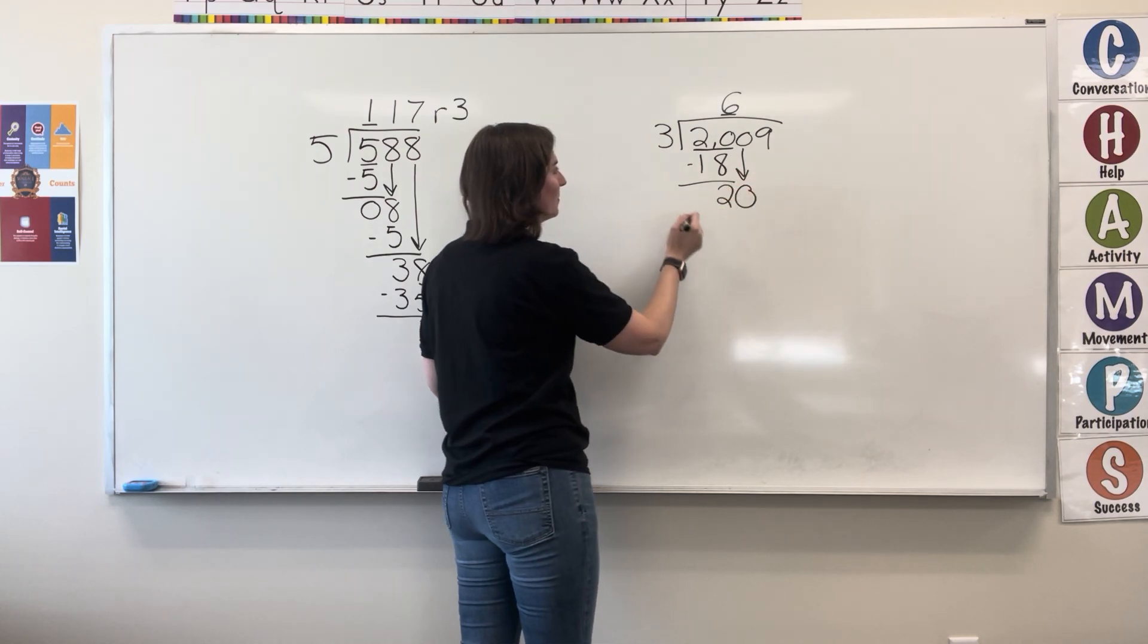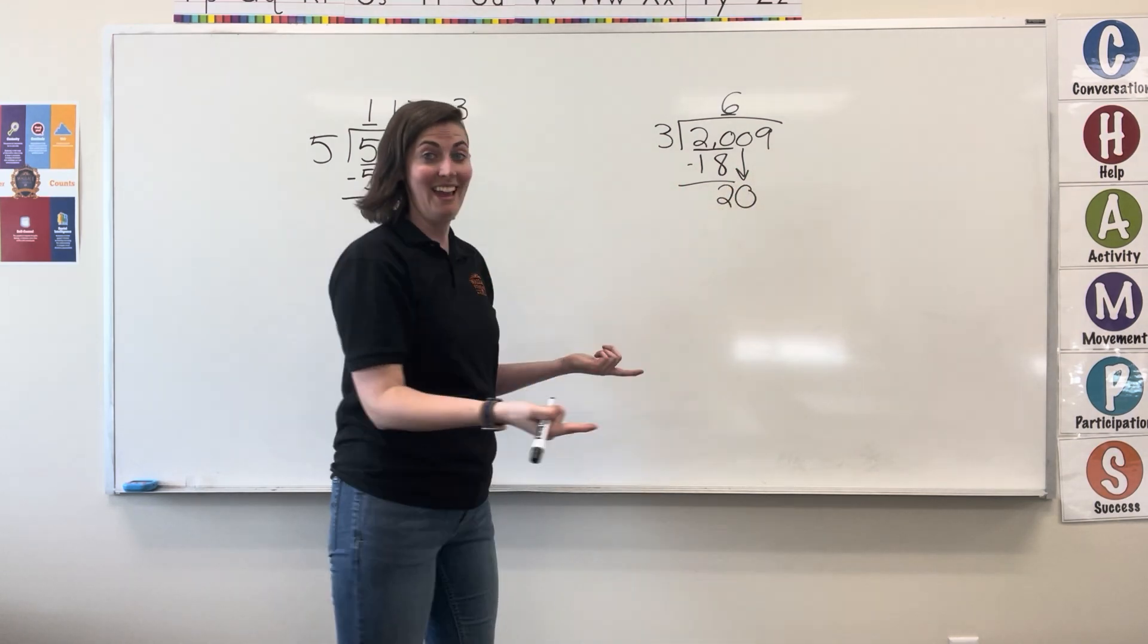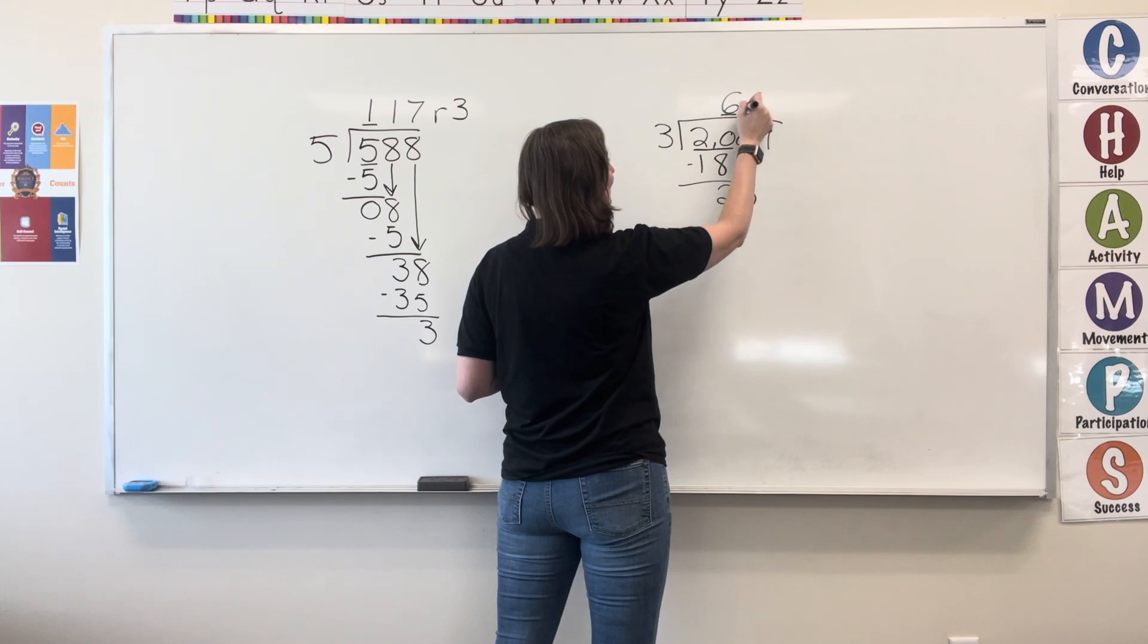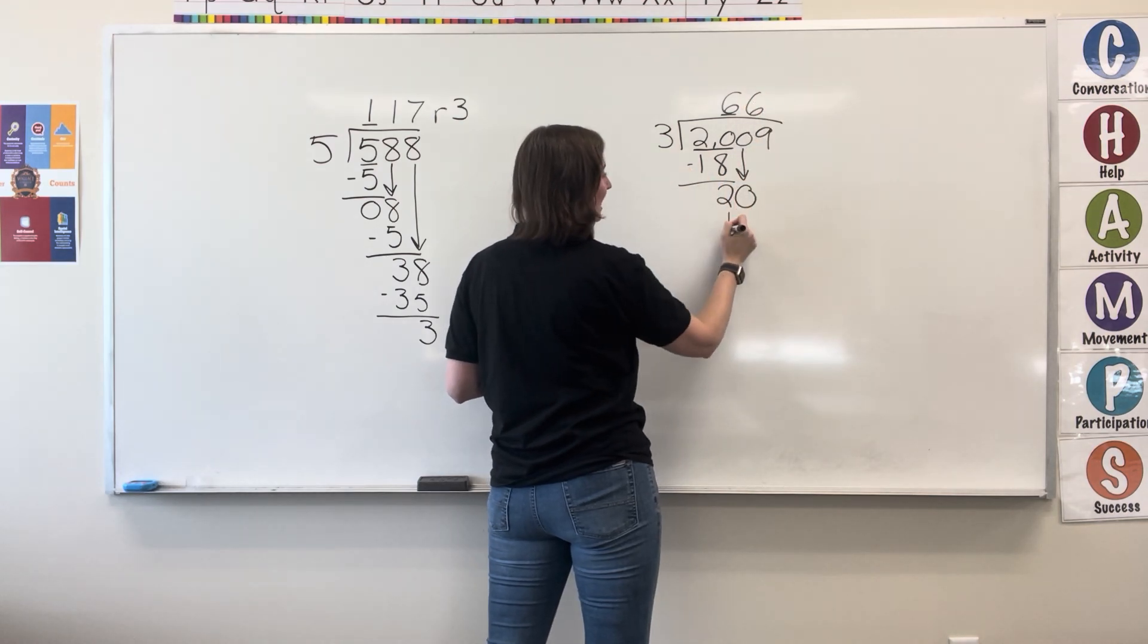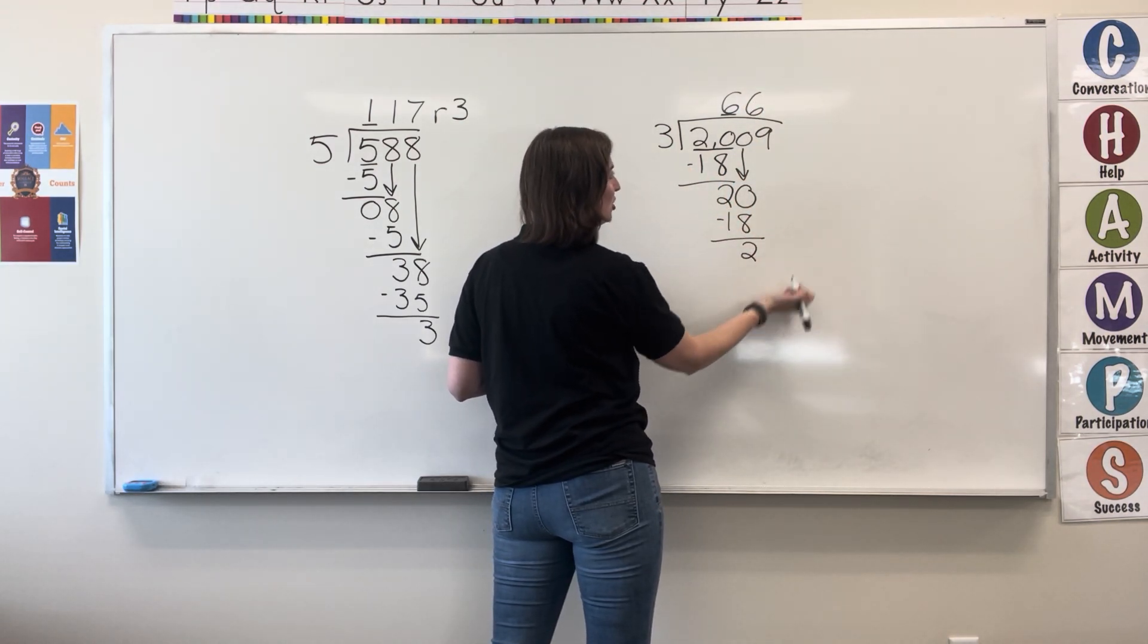Bring down the 0. 3 into 20 again. So we know that's 6. 6 times 3 is 18. Subtract, we get 2.